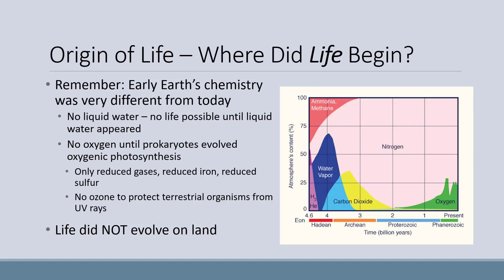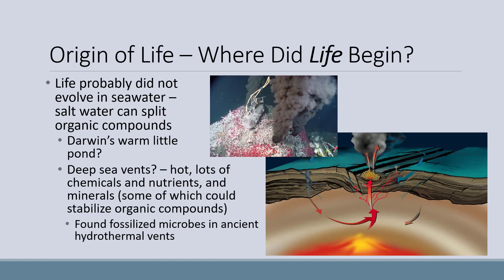No oxygen also meant there was no ozone to protect terrestrial organisms from UV rays, since ozone is made from oxygen. Because there was no ozone layer, we know life did not evolve on land. Life probably did not evolve in seawater either, because salt water can split organic compounds. Darwin proposed that life began in a warm little pond, which may be the case. Life could also have evolved in deep sea vents — these occur in the ocean, but it isn't the same as the surrounding seawater. Deep sea vents are extremely hot, with lots of chemicals, nutrients, and minerals, some of which could stabilize organic compounds. We've actually found fossilized microbes in ancient hydrothermal vents, so this seems like a likely place for life to have evolved.